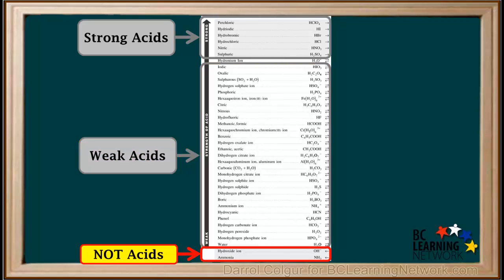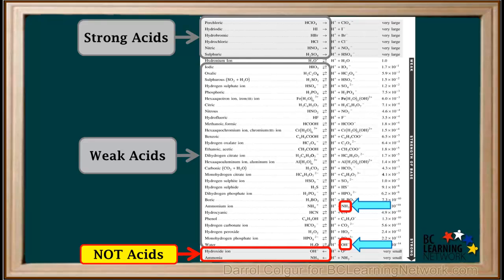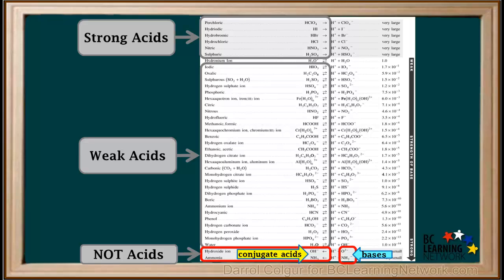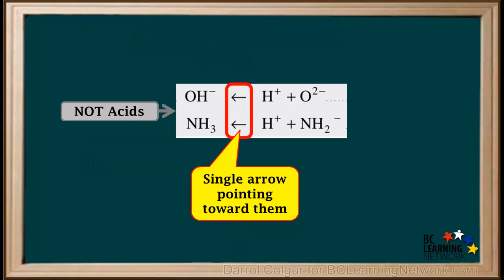Just a quick word about the two species on the very bottom of the left side, hydroxide and ammonia. These cannot act as acids in aqueous solution. They are found on the right side of the acid table and are classified as bases. The only reason they're written here is that they happen to be conjugate acids of the bases O2- and NH2-. Notice, they both have a single arrow pointing toward them, which is further verification that these are not acids. These reactions go only in reverse, not forward.